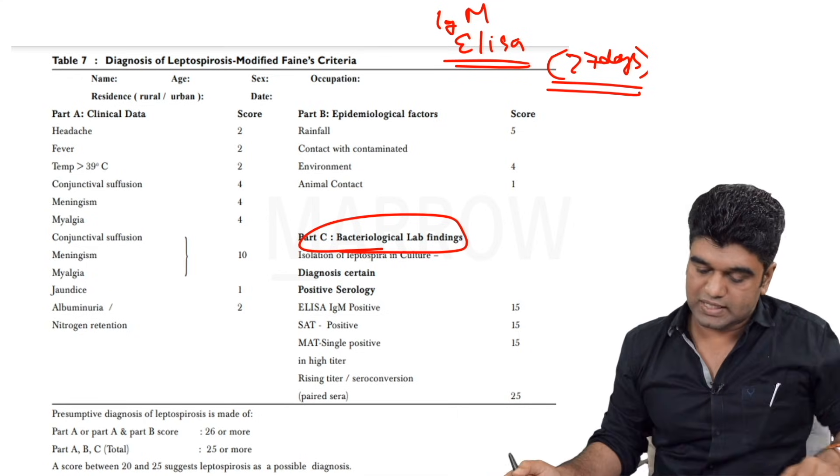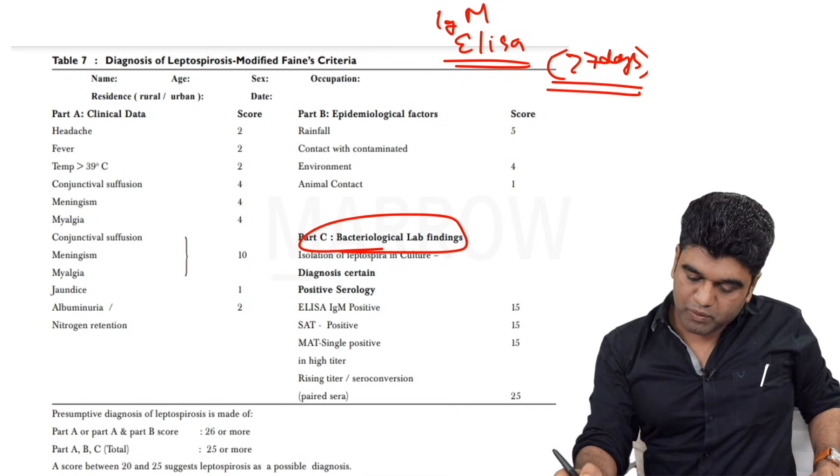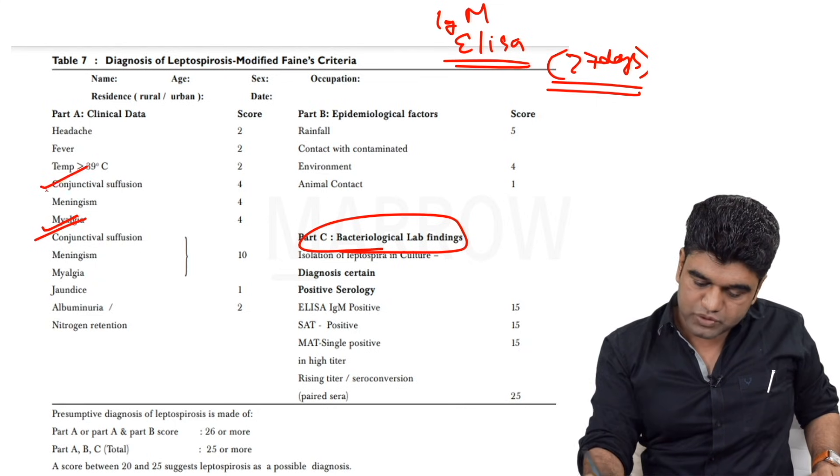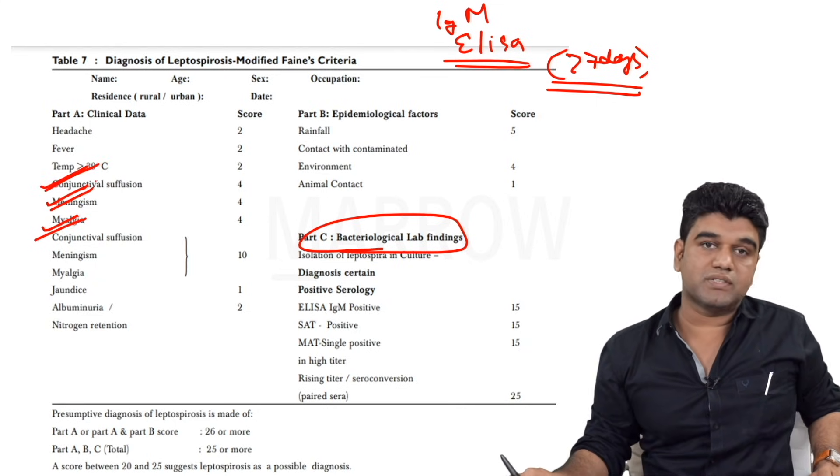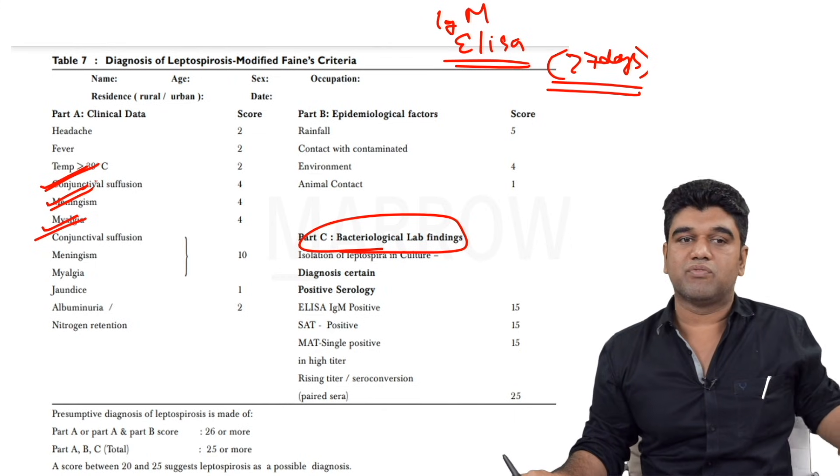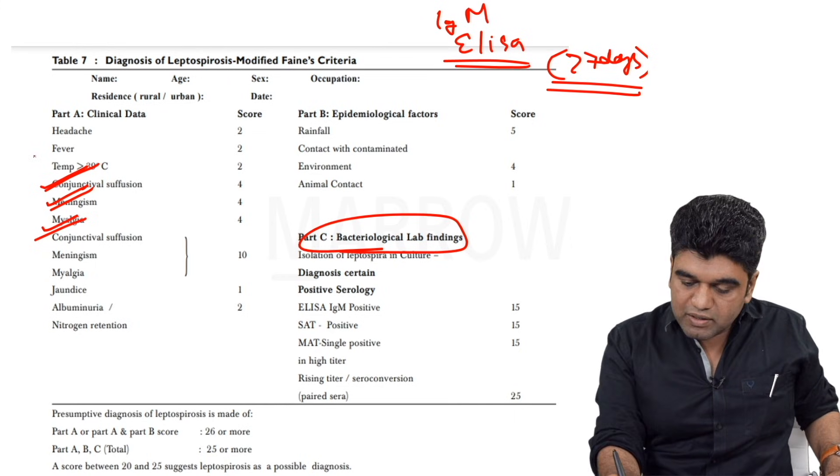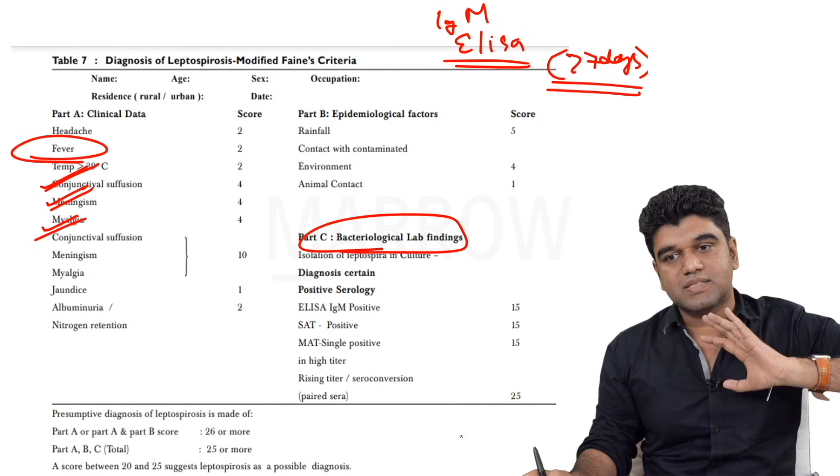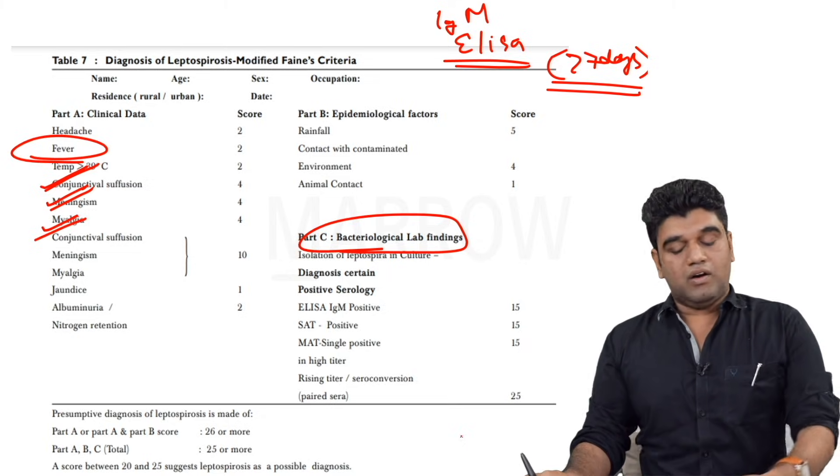Let's see what the symptoms - sir has given points. Sir has given points for myalgia, that is four points. Conjunctival suffusion, four points. Meningism, four points, which I said aseptic meningitis. Meningism is given four points. And fever, he has actually given only two points, which means that here it is myalgia that is most striking.